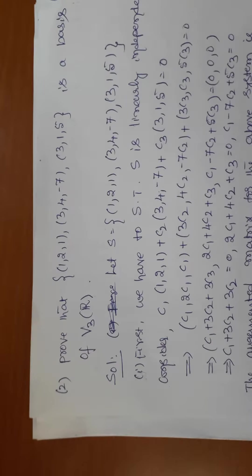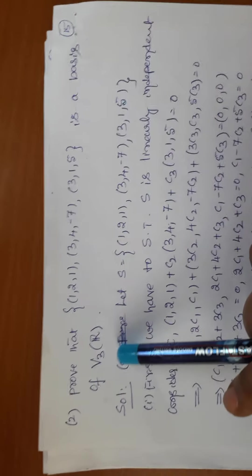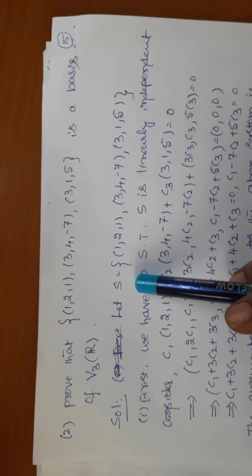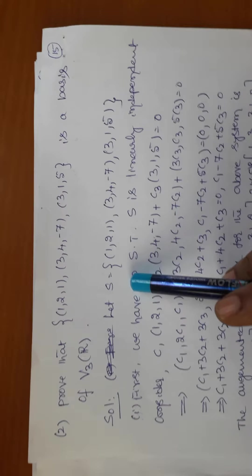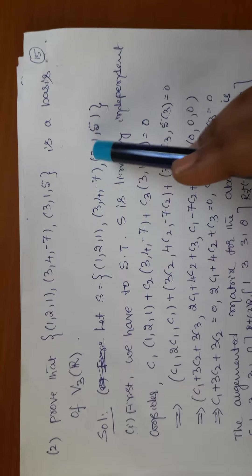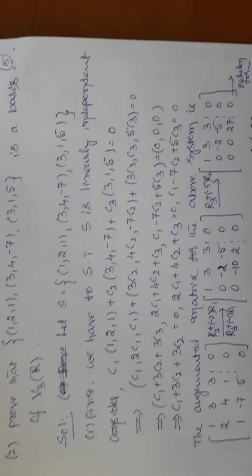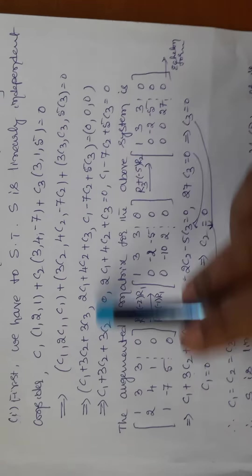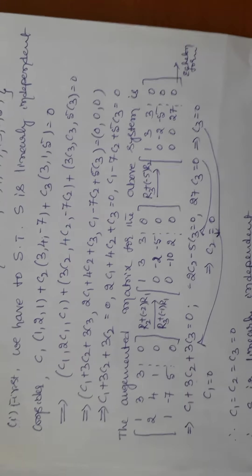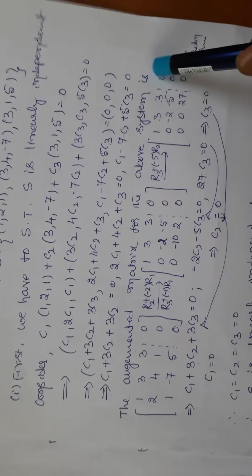Moving to the next problem: prove that the vectors (1,2,1), (3,4,-7), (3,1,2) form a basis of V3(R). First, I verify linear independence: c1·(1,2,1) + c2·(3,4,-7) + c3·(3,1,2) = 0. Multiplying by c1, c2, c3 and grouping corresponding components gives a system of three equations with three unknowns c1, c2, c3. The right-hand side zero vector is (0,0,0).